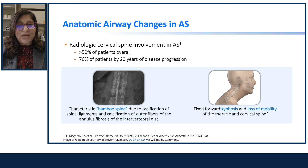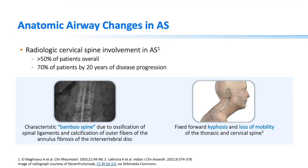Anatomic airway changes occur in patients with ankylosing spondylitis. Radiologic cervical spine involvement is present in more than 50% of AS patients. By 20 years of disease progression, 70% develop radiologic changes. There is a characteristic bamboo spine due to ossification of spinal ligaments and calcification of the outer fibers of the annulus fibrosus of the intervertebral disc. This results in fixed forward kyphosis and loss of mobility of the thoracic and cervical spine.